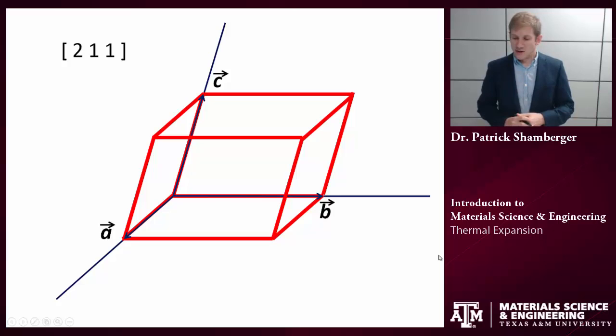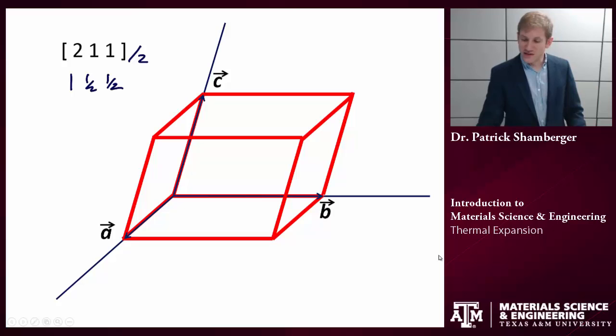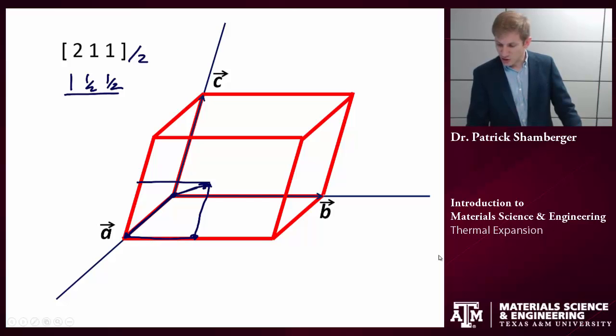First is if I want to keep this direction entirely within the one unit cell. And so this is essentially the exact opposite of the process that we just did. So I need to divide through so that all of these numbers are less than 1. So if I divide this whole thing by 2, I get 1, 1 half, 1 half. And this is going to be the position of the head of that direction. So I can start at the origin. And I can go to 1, 1 half, 1 half. So 1 is the fractional coordinate in the x direction. 1 half in the b direction. And 1 half in the c direction. And so this is a vector that goes from the origin to the exact middle of this front face.